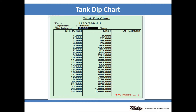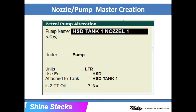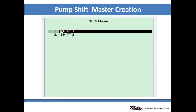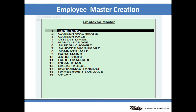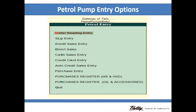The next one is the tank deep chart — you can automatically send it for the tank deep chart, and easily maintain it manually. Next is the nozzle wise master creation — how many nozzles you can easily create. And the next one is the shift chart — how many shifting timings you can easily create. And next, the employee master — how many employees and companies you can easily create.